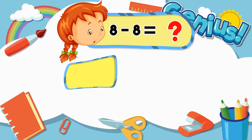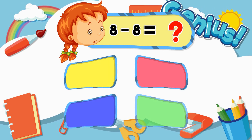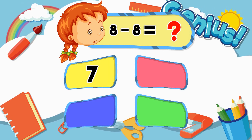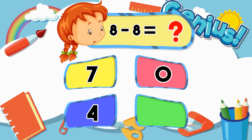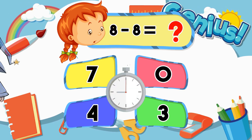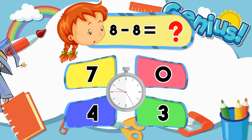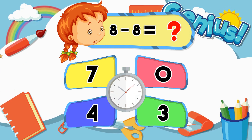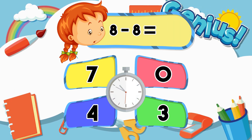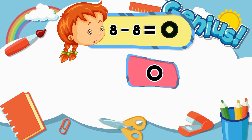What is eight minus eight? Seven. Zero. Four. Three. Zero.